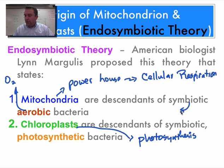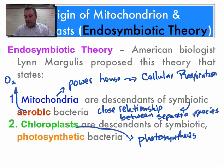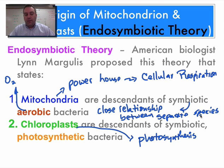Symbiosis is a word we really haven't come across yet. Symbiosis means a close relationship between separate species. When we get to ecology we're going to go over this in more detail, but just remember that these two species are kind of working together to help both survive.